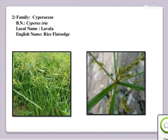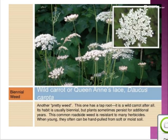Then Labad — English name is Arise Flat Sedge; family Cyperaceae. This is Wild Carrot or Queen Anne's Lace; Daucus carota. It is also a pretty weed and has a taproot — it's wild carrot. Its habit is usually biennial but plants sometimes persist for an additional year. This is a common roadside weed; it is resistant to many herbicides.